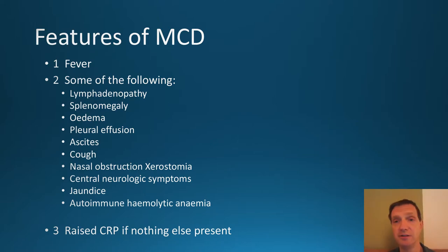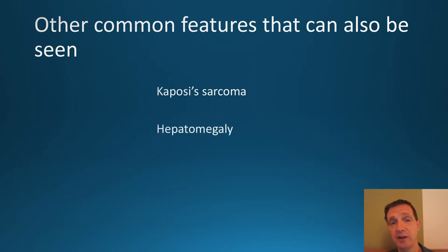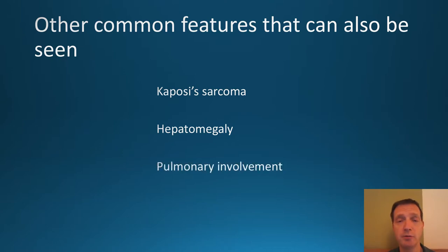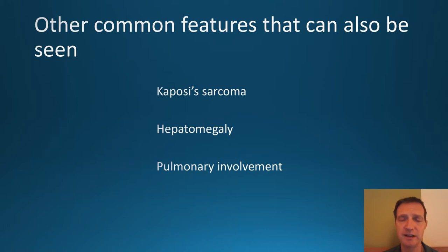Other common features, seen in 40 to 50 percent of patients with Castleman's disease, include Kaposi's sarcoma, hepatomegaly, and pulmonary involvement. Lung problems can include Kaposi's sarcoma within the lungs, fluid on the lungs, or breathing problems depending on where enlarged lymph nodes are located within the body.